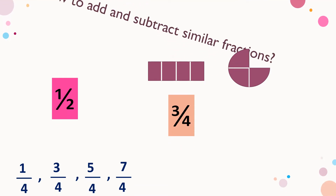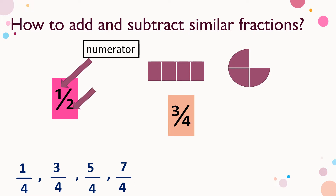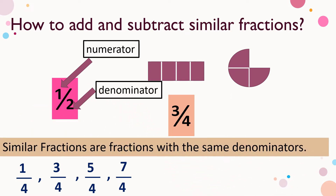How to Add and Subtract Similar Fractions. In one-half, one is what we call the numerator and two is what we call the denominator. Similar fractions are fractions with the same denominators, like one-fourth, three-fourth, five over four, and seven over four. They have a common denominator which is four.